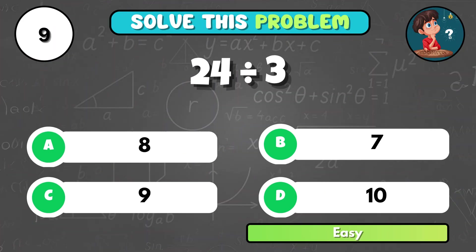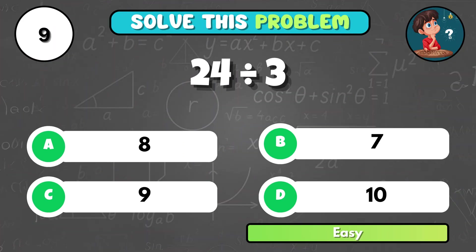How much is 24 divided by 3? It equals A, 8.